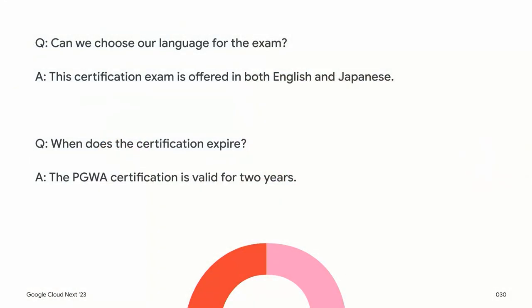Can we choose our language? Yes — your choices are English or Japanese. When does the certification expire? It's good for two years. You'll be notified through Criterion, based upon the email you set up for the certification.